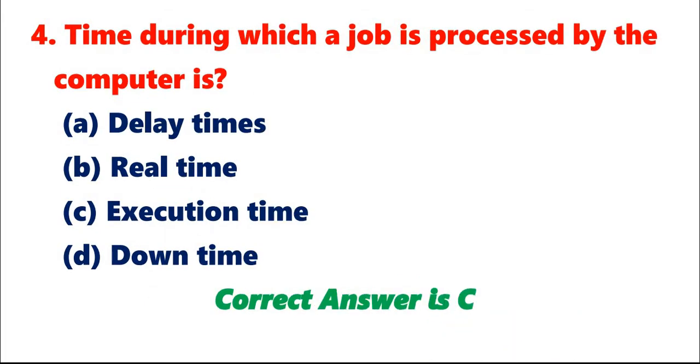Question 4: Time during which a job is processed by the computer is A. Delay times. B. Real time. C. Execution time. D. Downtime. Correct answer is C.